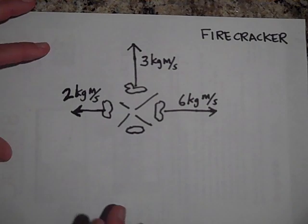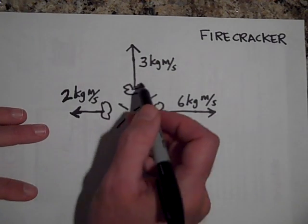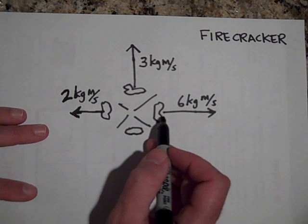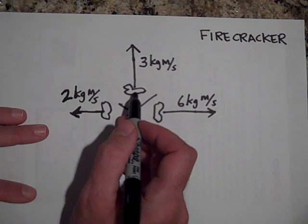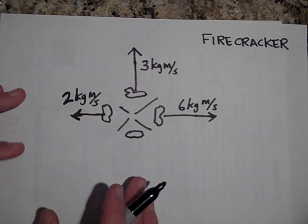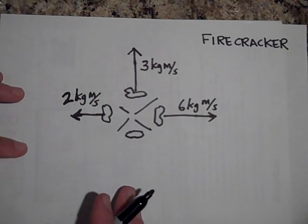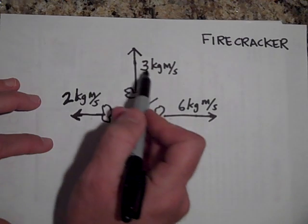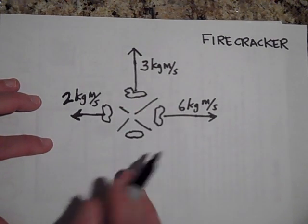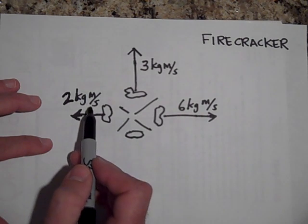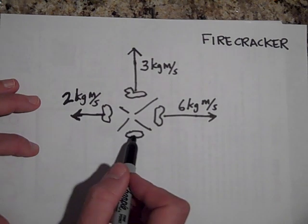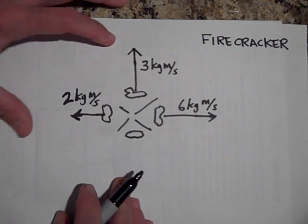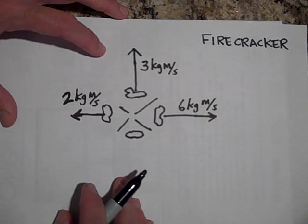Okay, now we have a firecracker. It's going to explode in mid-air — actually, let's have it explode in outer space so there's no force of gravity. It's going to explode into four chunks. This chunk will have a momentum of 6 kg·m/s, this one will have a momentum of 3 kg·m/s, and this one will have a momentum of 2 kg·m/s. What does the momentum of the fourth chunk have to be? Go ahead and pause and see if you can figure it out.